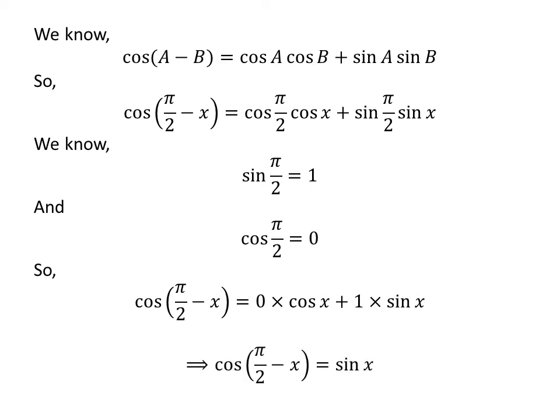As 0 times cosine of x equals 0 and 1 times sine of x equals sine of x, cosine of half of pi minus x is equal to 0 plus sine of x, which is equal to sine of x. So the value of cosine of half of pi minus x is equal to sine of x.